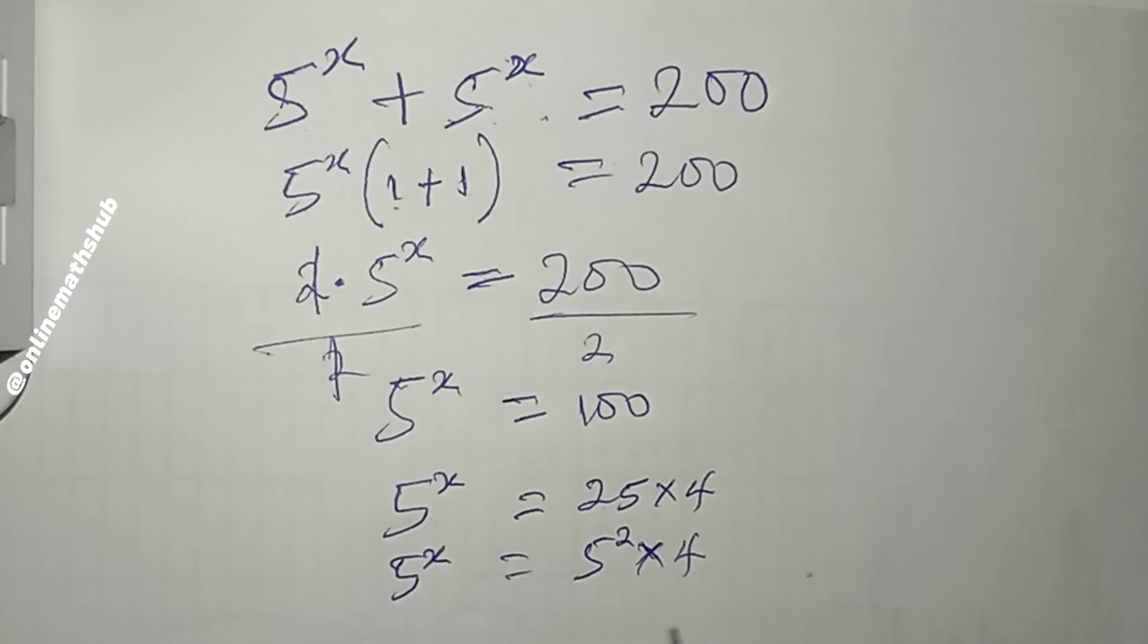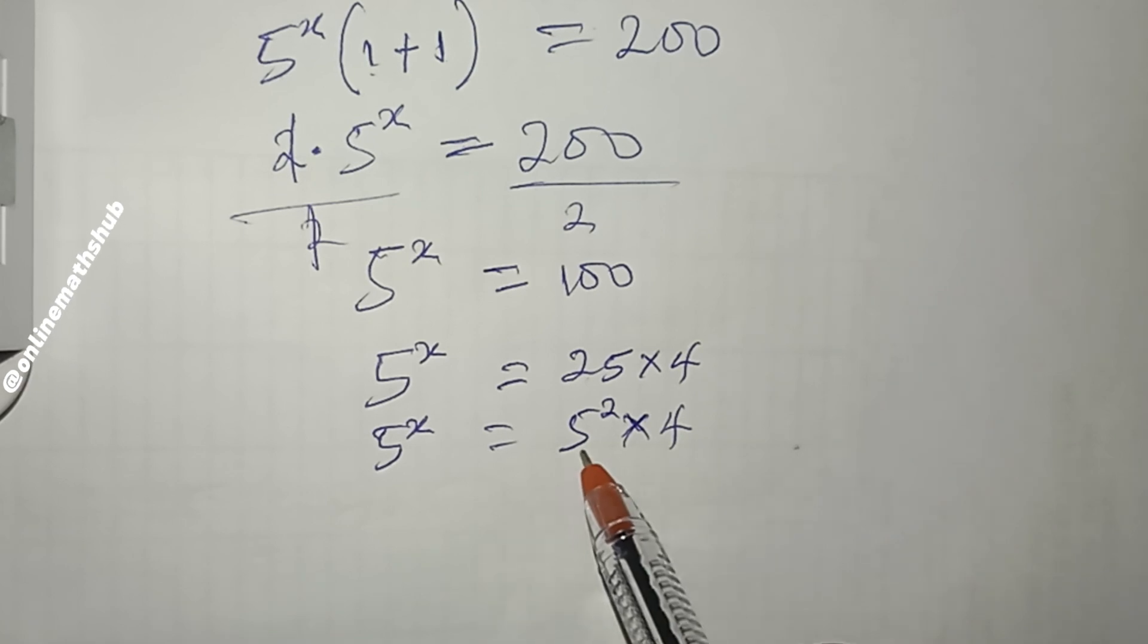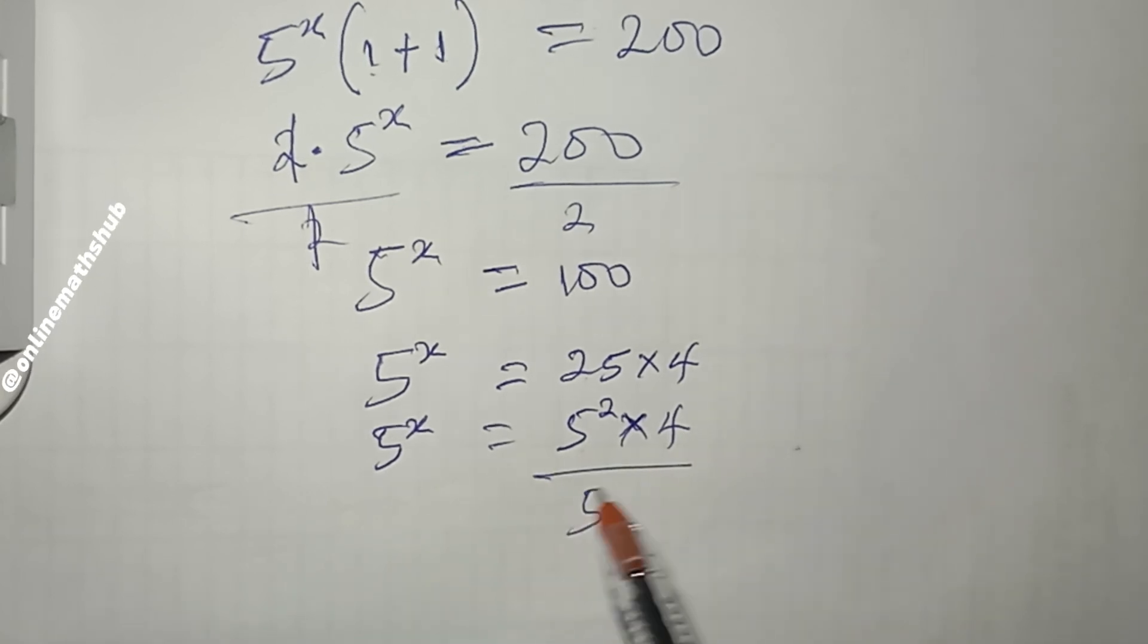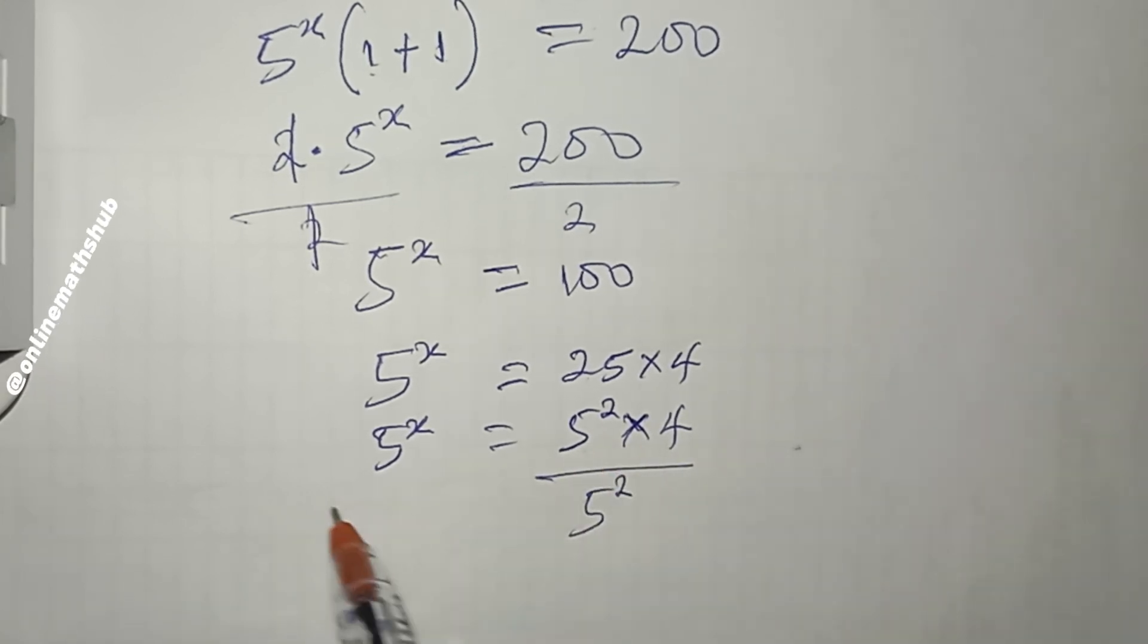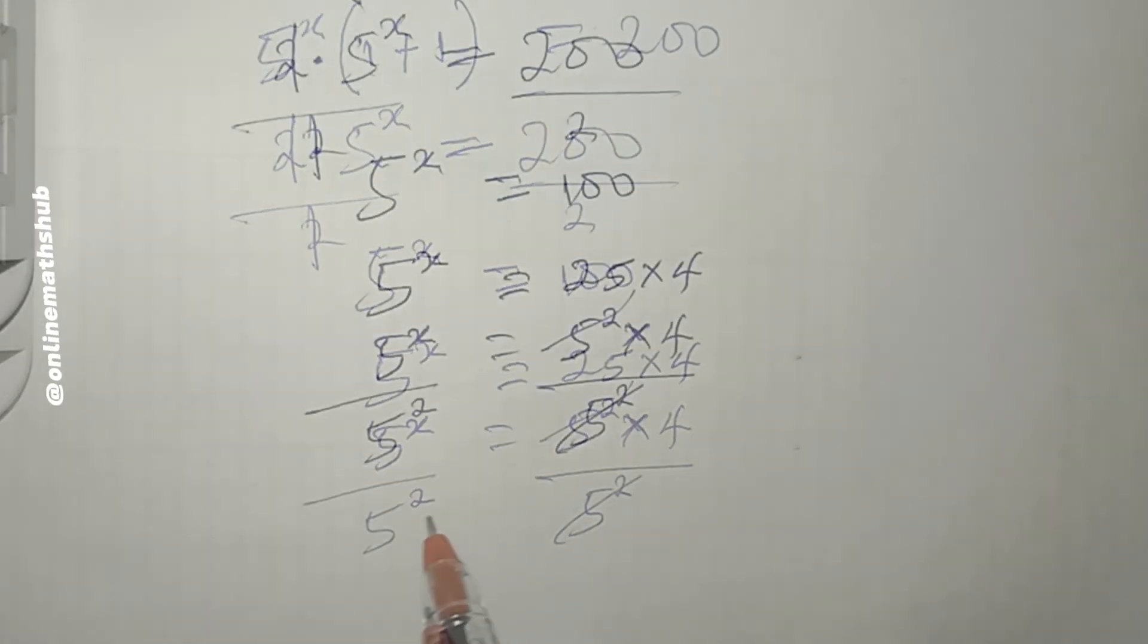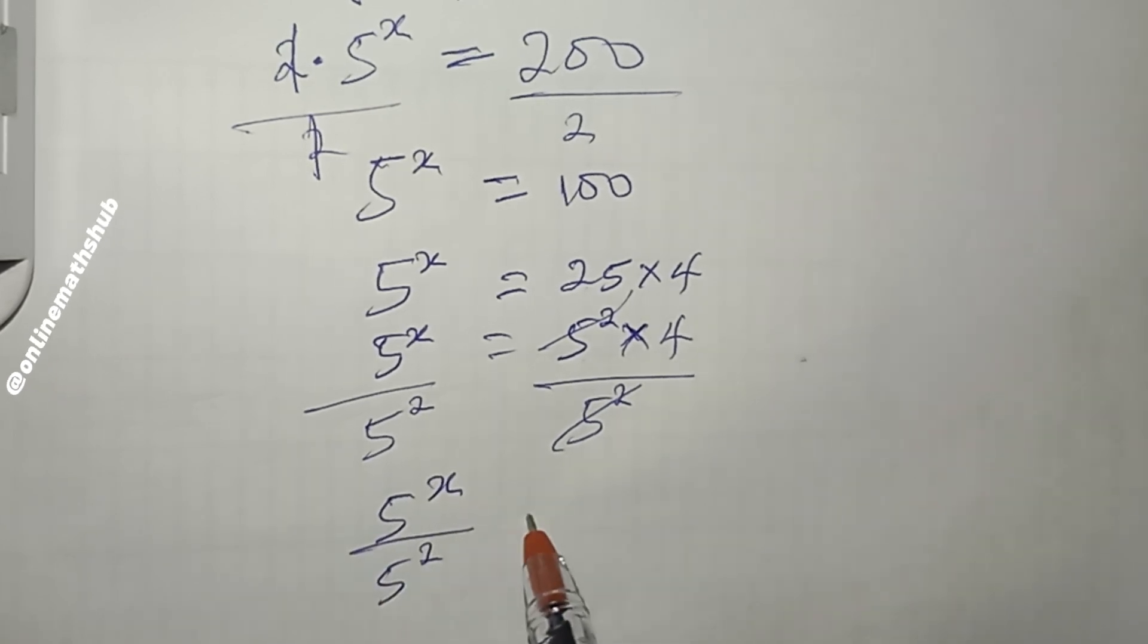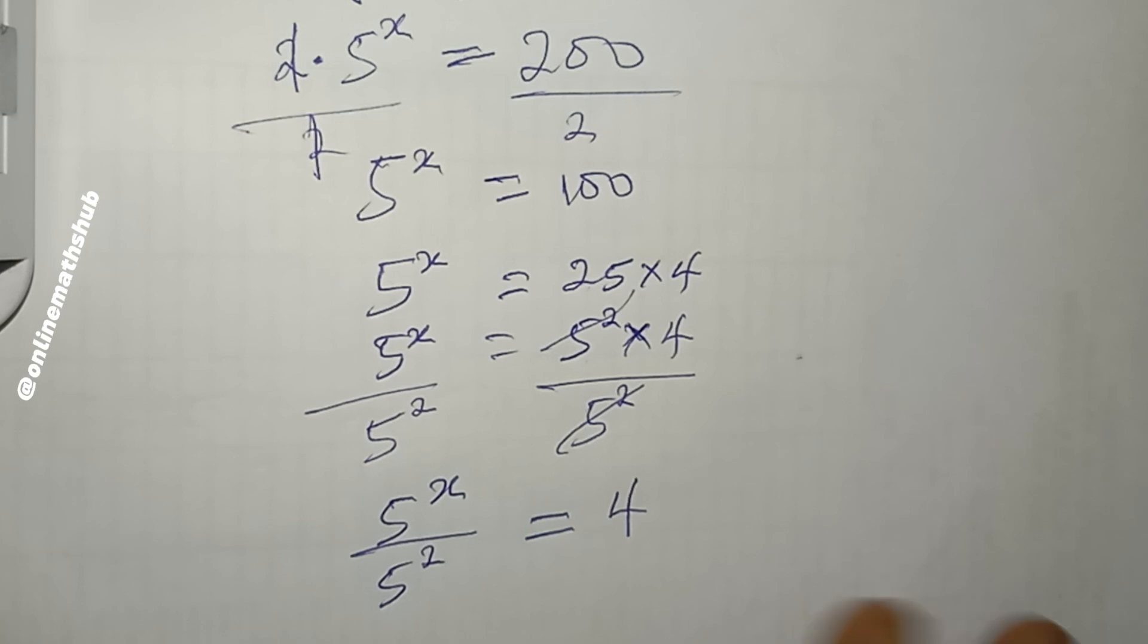So that we can collect like terms, we can divide through by this 5^2 to remove it from this side and bring it to the left hand side. This cancels, and then 5^x divided by 5^2 is now equal to 4.